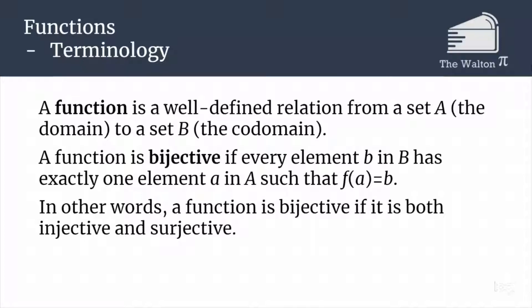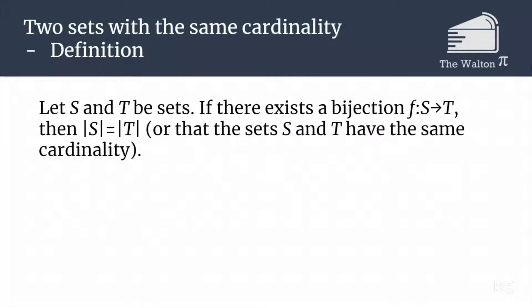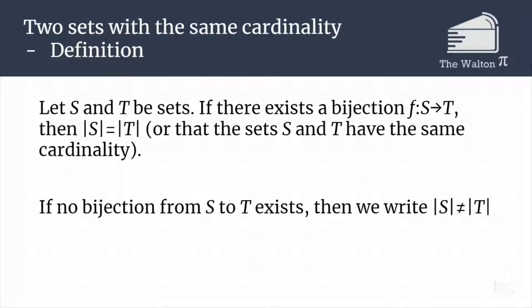If you would like a refresher on any of these things, feel free to check out some of my videos in the cards. We define two sets to have the same cardinality if there is a bijection from one set to the other. So two sets will have the same cardinality if there is a one-to-one and onto map from the elements in S to the elements in T. If no bijection exists, then we write that the cardinalities are not equal.